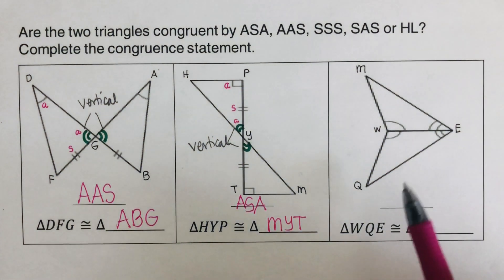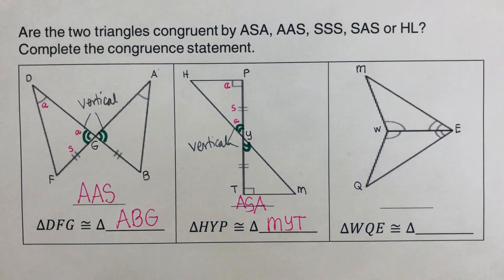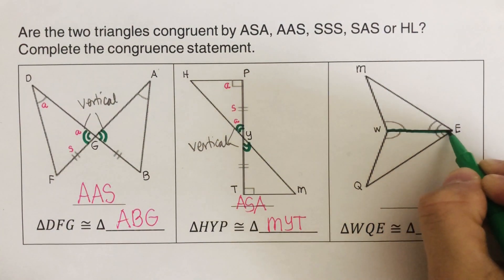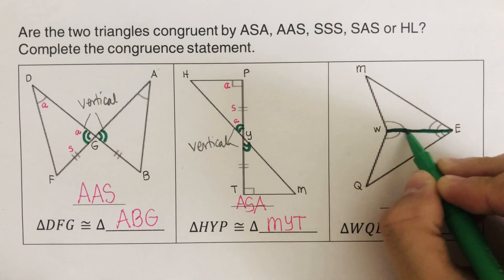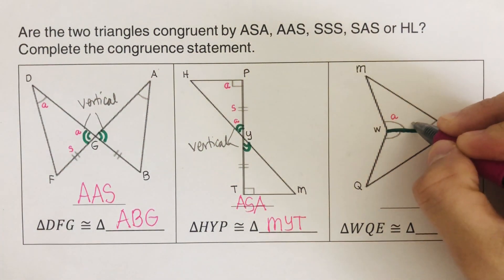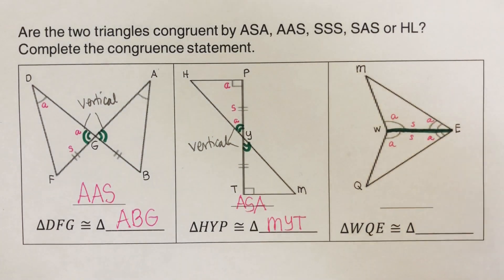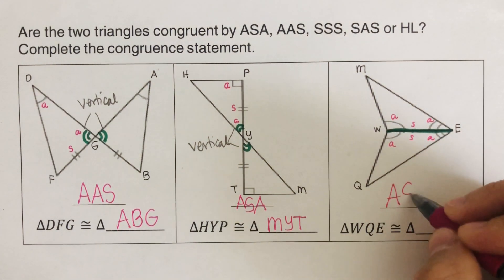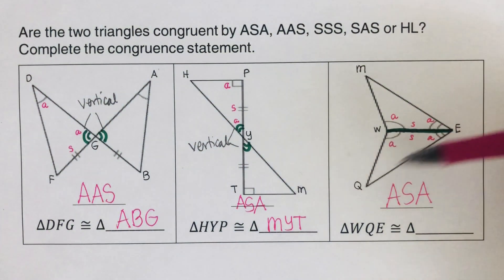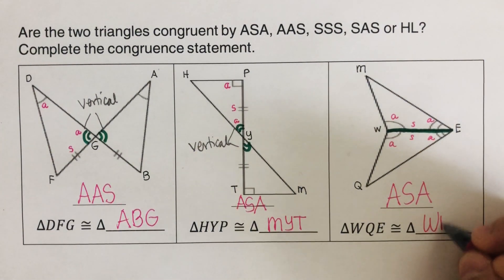Let's take the next one. Others might ask where the other congruent side is — this side is shared by both triangles, so if they are sharing it, it is congruent. So we have an angle, side, and angle — this is ASA. The triangle is W, Q, E, so the congruent statement gives us triangle WQE is congruent to triangle WME.